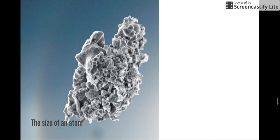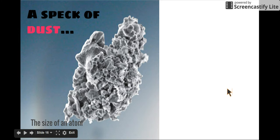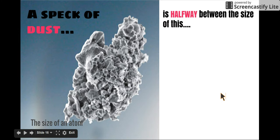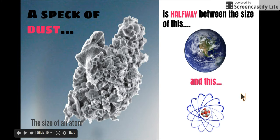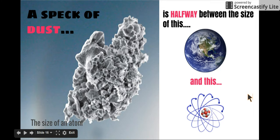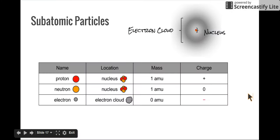Here's a size comparison for the atom. What we're looking at is a speck of dust. A speck of dust is halfway between the size of the Earth and an atom — that just blows my mind. You can barely see a speck of dust, yet atoms are so much smaller than that. The speck of dust is halfway between the size of an atom and the Earth — that's the scale we're talking about. Atoms are really, really small and don't take up a lot of space.